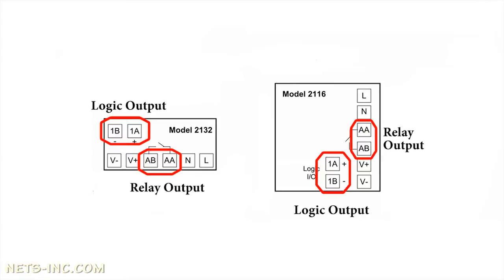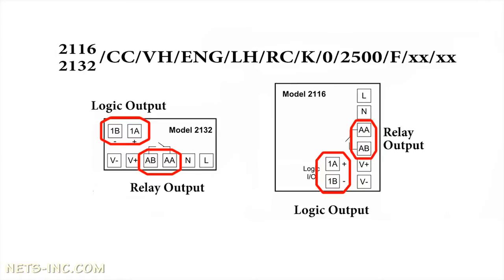For the purposes of this demonstration, we will consider the 2132 or 2116 to be set up as a heat or cool controller, with the logic output set up as the heating output and the relay output set up as the cooling output. The process input will be a type K thermocouple set up in degrees Fahrenheit.